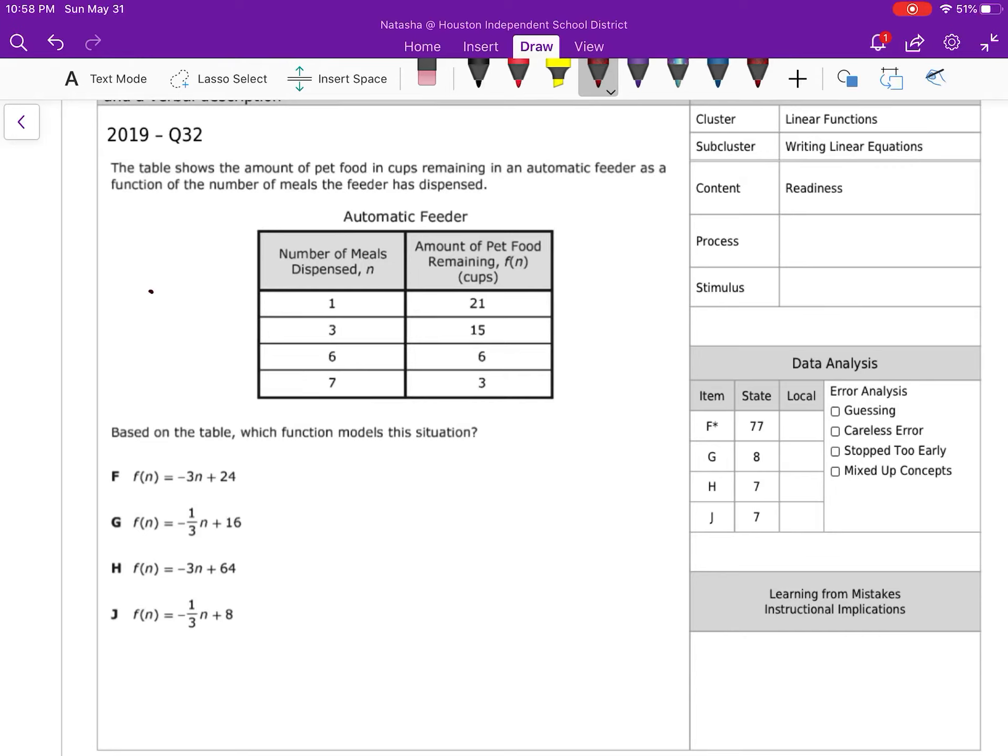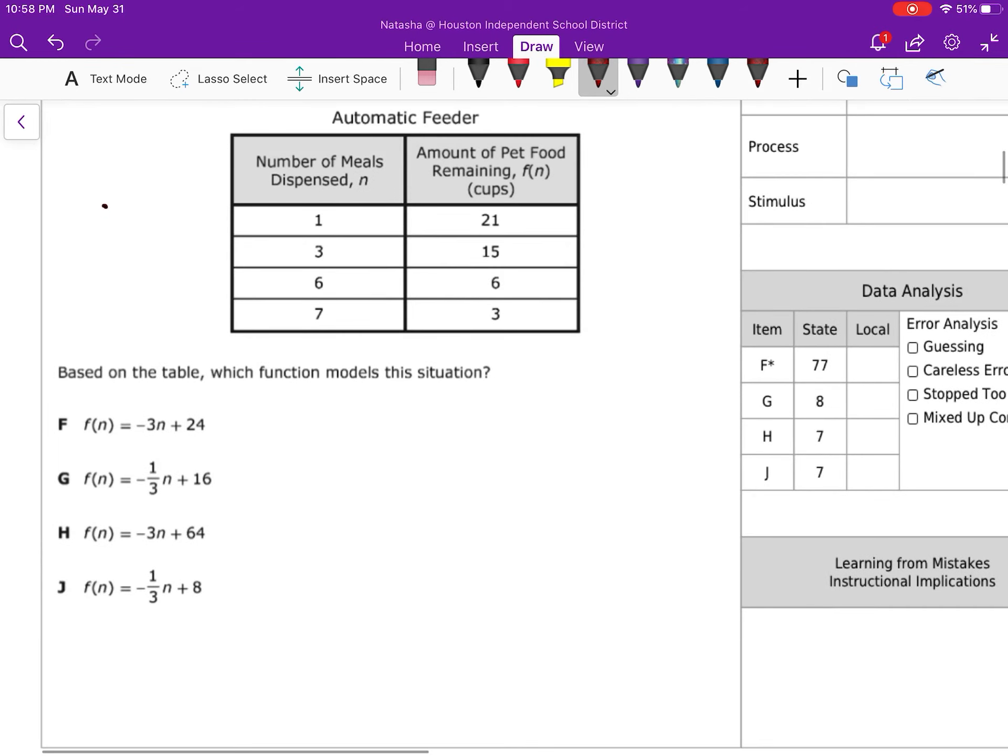All right, so the table given here below, we're looking at a table and then we want to write the equation from the table. I'm going to find what my slope is. I'm going to see what happens when I go from 21 to 15. I'm subtracting 6. When I go from 1 to 3, I'm adding 2.